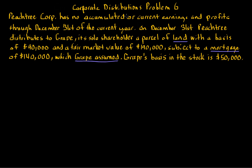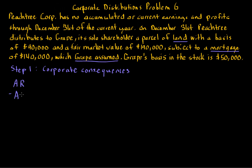Anytime we have a distribution, remember that distribution in tax law is not the same definition as a dividend. A distribution might be a dividend, but it also might not, depending on the facts and circumstances. Anytime we have a distribution, whether cash or property, we have four steps to consider. Step one is to look at the tax consequences to the corporation. When it comes to a property distribution like we have here — land, rather than cash — we take the amount realized minus the adjusted basis of that property, and that gain, but never a loss, must be recognized.